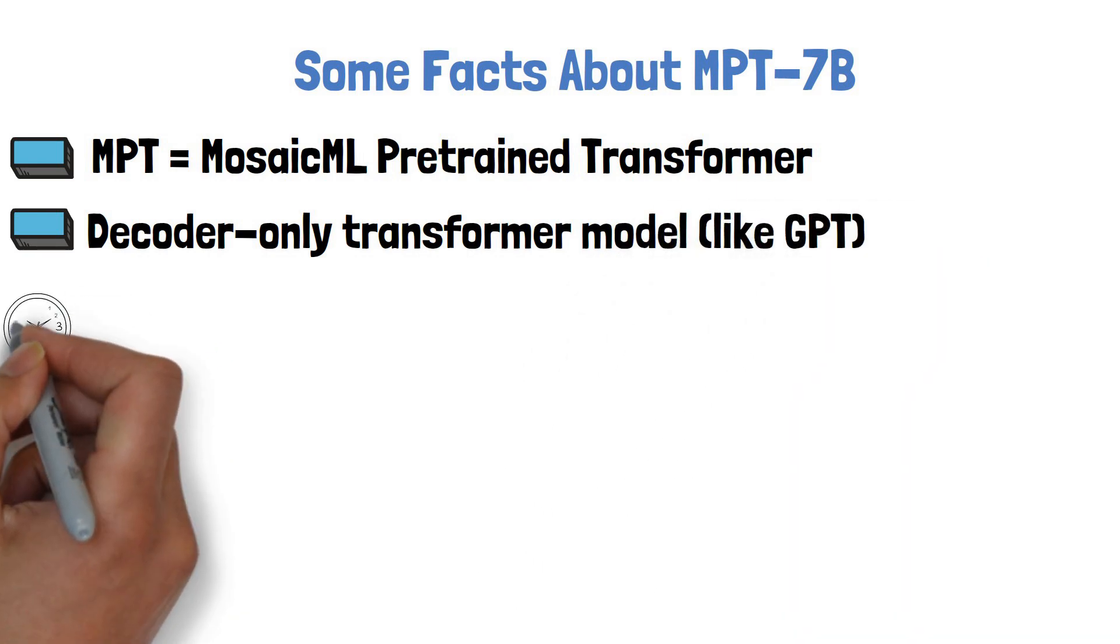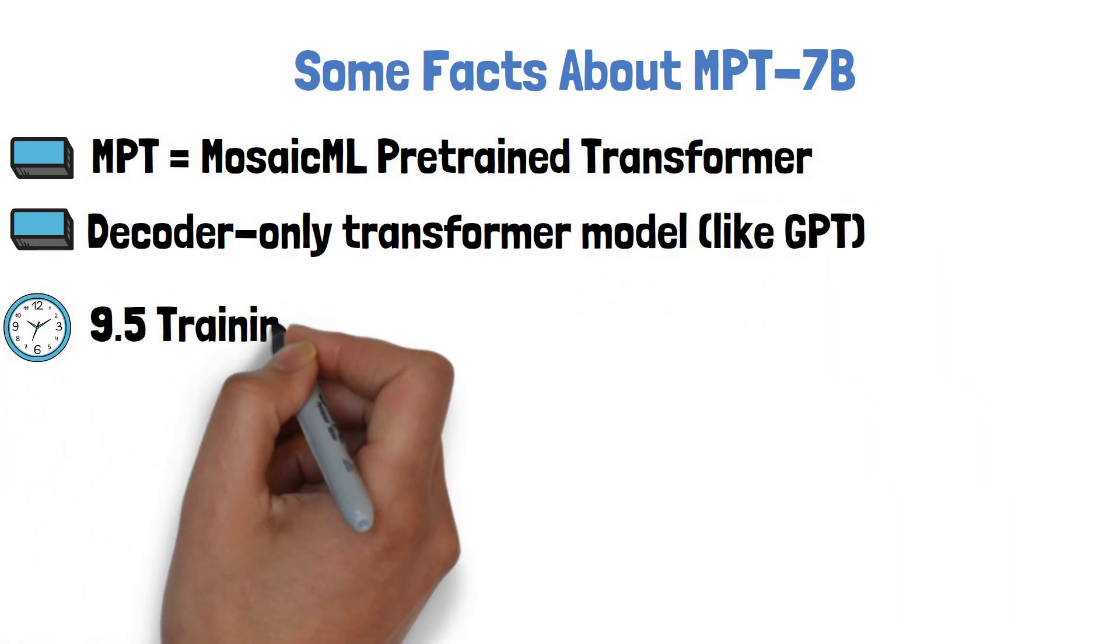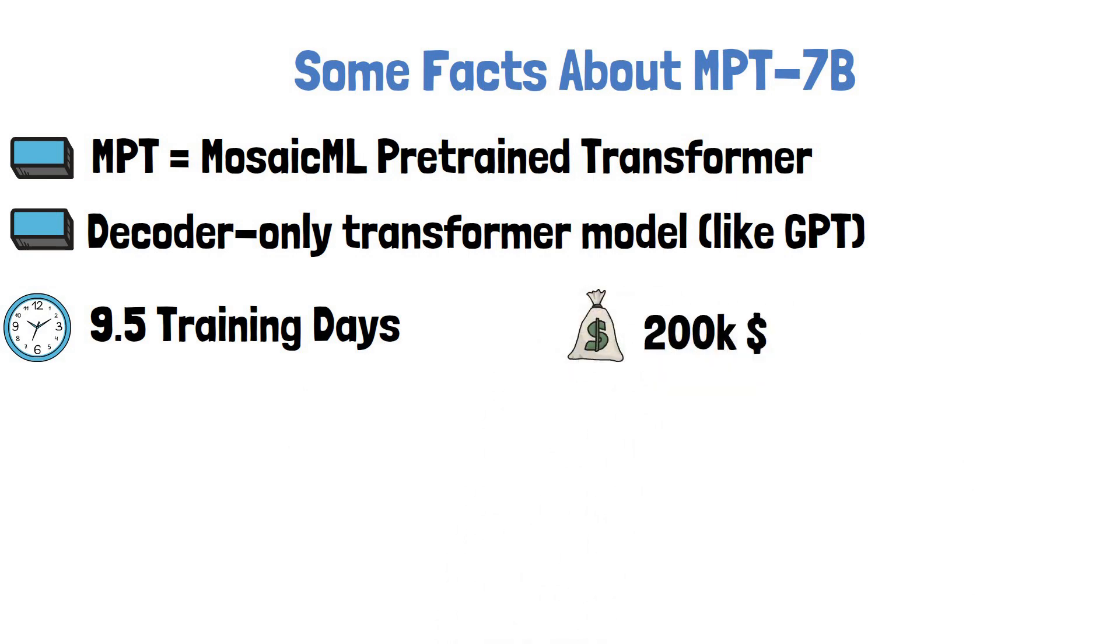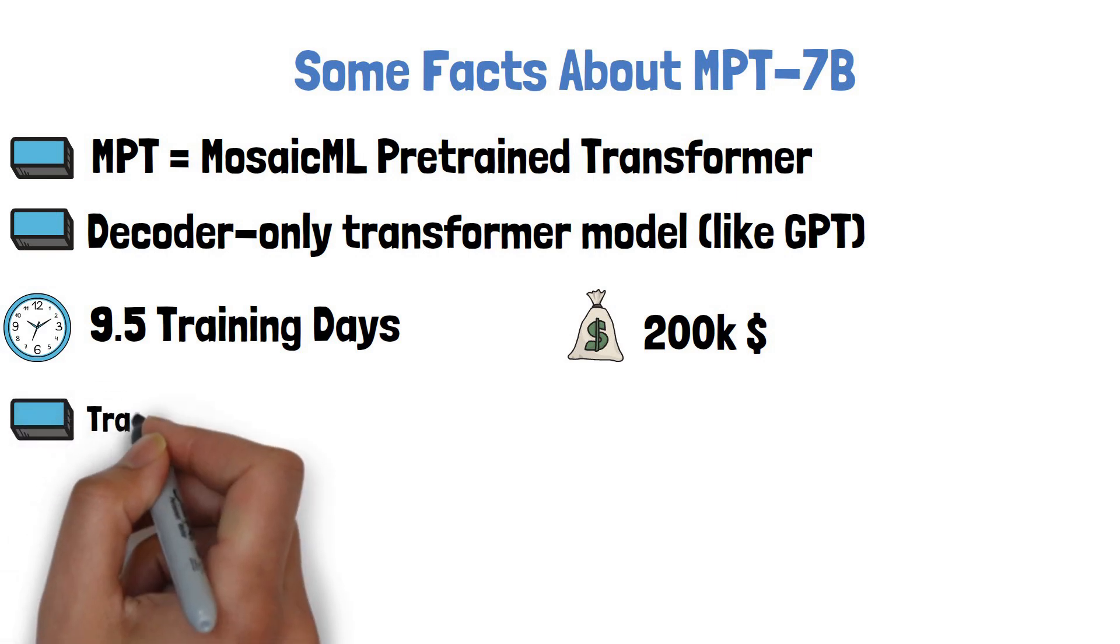MPT-7B was trained for 9.5 days on MosaicML platform at the cost of $200,000, which even if it sounds a lot, it is faster and cheaper than what it would take to train a Llama-7B model from scratch.